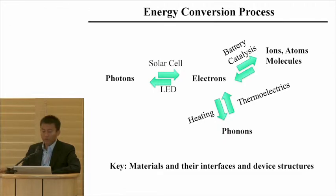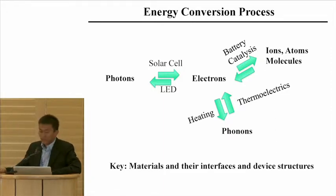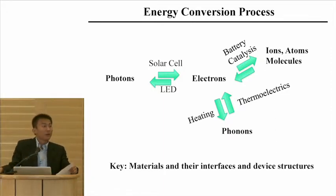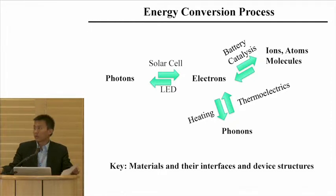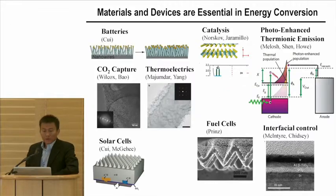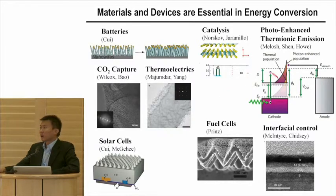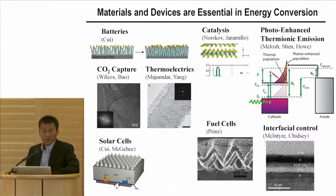And electrons and phonons — we think about heating, cooling, thermoelectrics, and so on. Underlying all of this is really getting this process going through the materials and devices. To have the next generation of breakthrough technology, materials, devices, and their interface are what we need to tackle. Looking at the GCEP funding projects, materials and devices are essential.